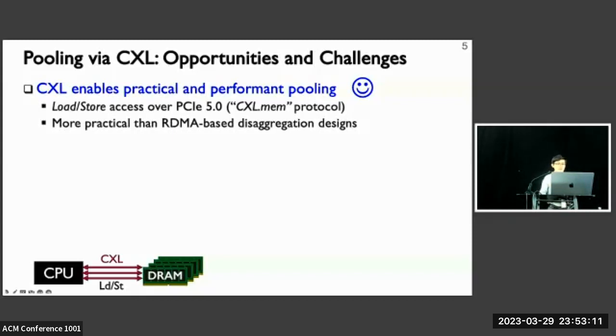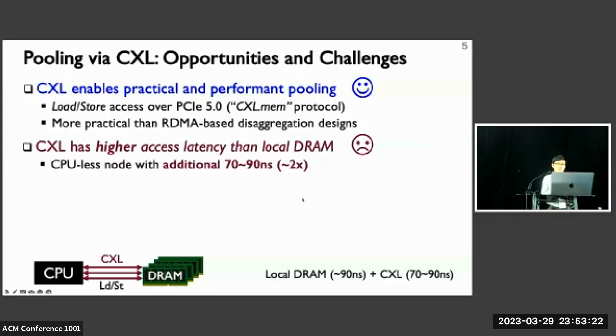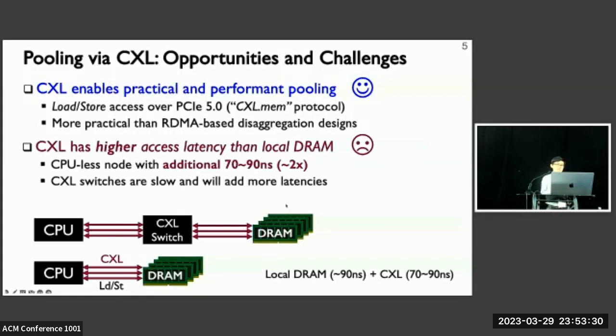However, when compared to local DRAM, CXL's latency is still higher. CXL adds additional latency similar to a NUMA hop, which almost doubles the latency compared to local DRAM access. Also, CXL switches are slow and will potentially add more latencies, thus latency-sensitive workloads will potentially suffer more from the additional CXL latencies.